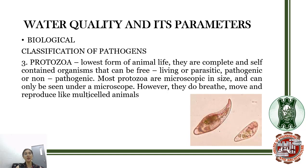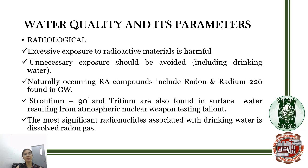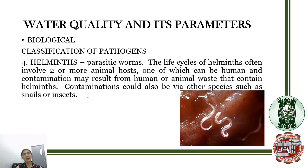The third pathogen classification is protozoa, considered the lowest form of animal life. They are complete and self-contained organisms that can be free or parasitic, pathogenic or non-pathogenic. Most protozoa are microscopic in size but they do breathe, move, and reproduce like multi-celled animals. The fourth classification is helminths, which are parasitic worms. The life cycle of helminths often involves two or more animal hosts, one of which can be human, and contamination may result from human or animal waste containing helminths, or from other species such as snails or insects.